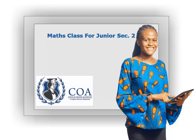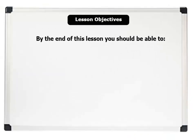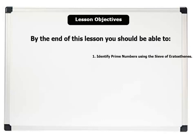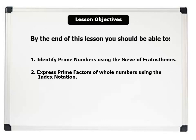Welcome. The topic of this lesson is prime numbers and prime factors. Lesson duration is about five minutes. Our lesson objectives: by the end of this lesson you should be able to one, identify prime numbers using the Sieve of Eratosthenes; two, express prime factors of whole numbers using the index notation; three, solve problems involving prime factors.